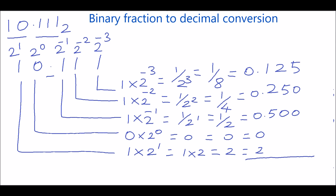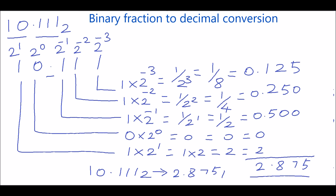Now sum these values: 0.125 plus 0.250 plus 0.5 plus 0 plus 2. Adding the fractional parts: 0.125 + 0.250 + 0.5 = 0.875. Adding the integer part: 0.875 + 2 = 2.875. So the binary number 10.11₂ can be written as 2.875 base 10. Hope you understand this concept. Thank you.